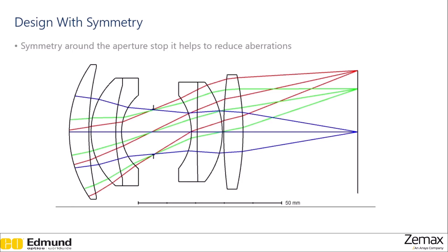It's also good to design with symmetry around the aperture stop, as this helps to reduce aberrations. For example, the double gauss design shown below is a common design that takes advantage of symmetry, allowing the aberrations of the lenses on the left side of the aperture and on the right side of the aperture to counteract each other, reducing the aberration for the system as a whole.